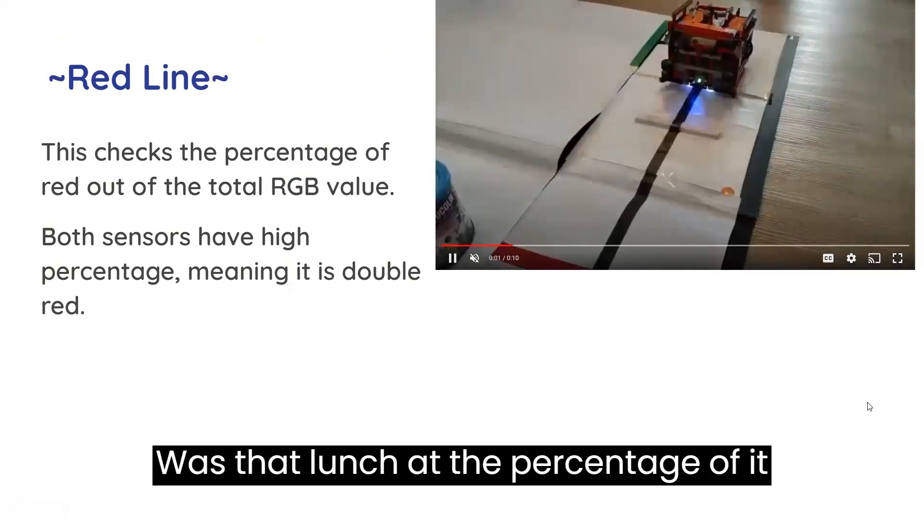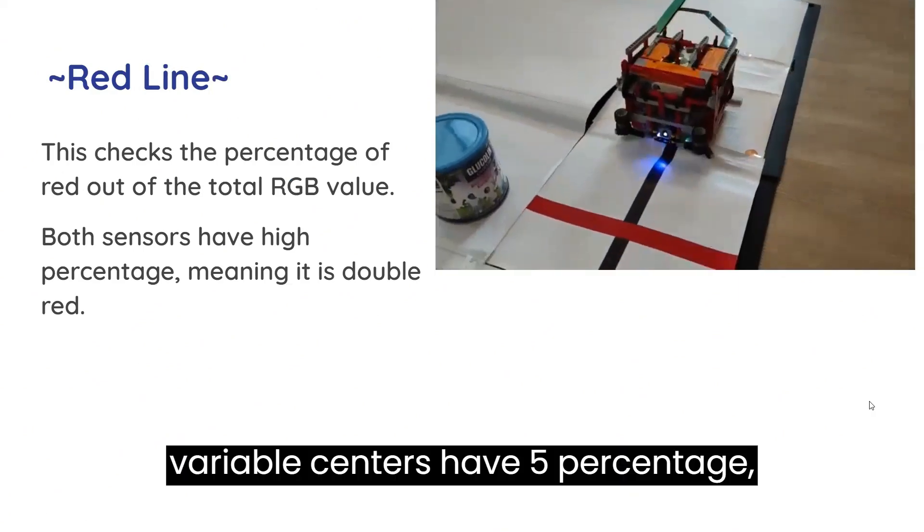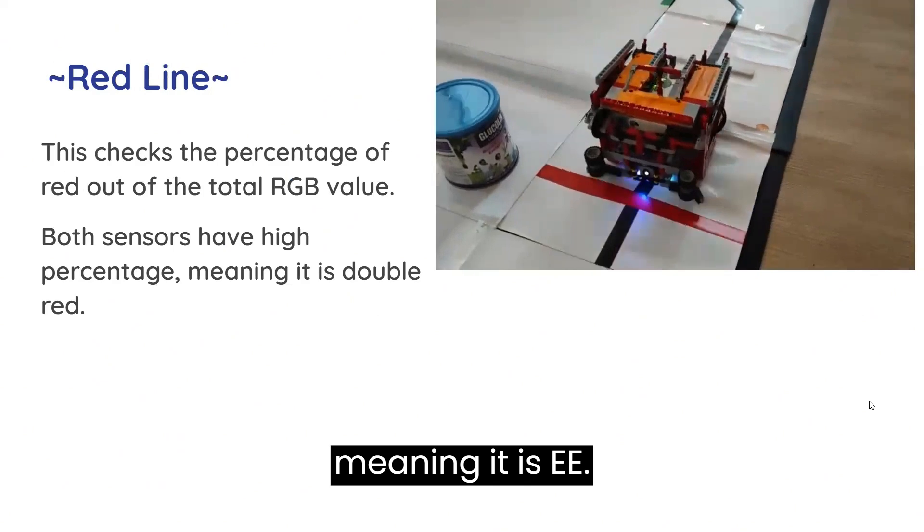The red line checks the percentage of red out of the total RGB value. Both sensors have 5 percentage, meaning the red double black.